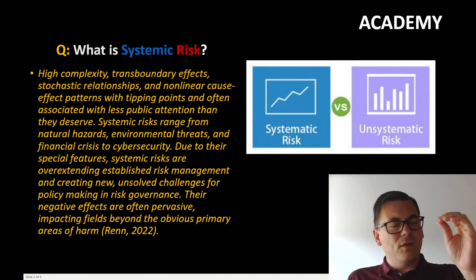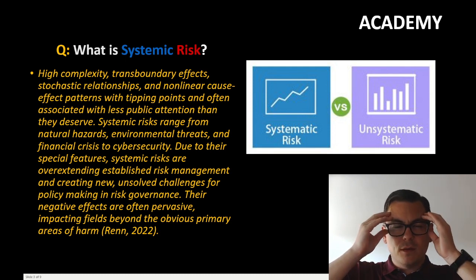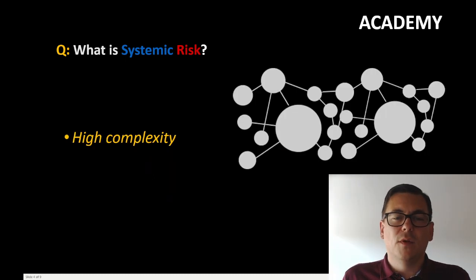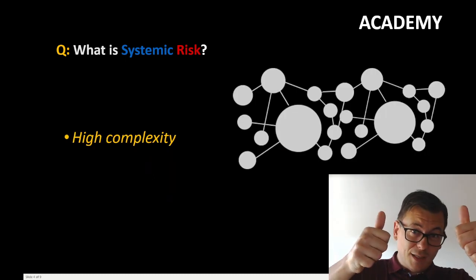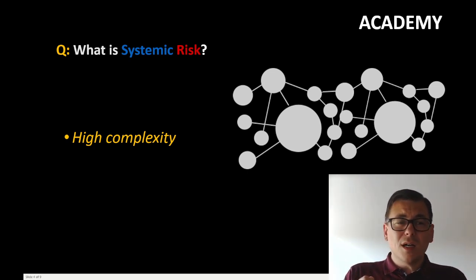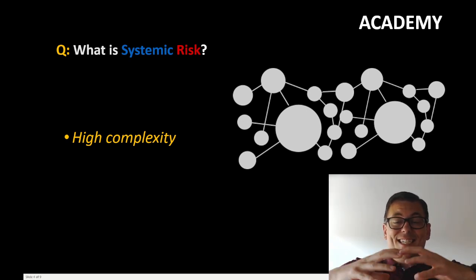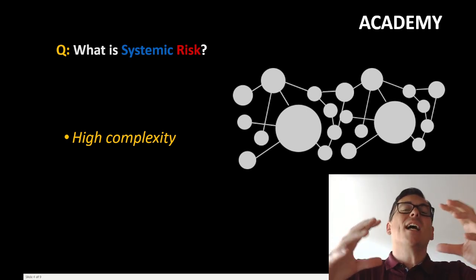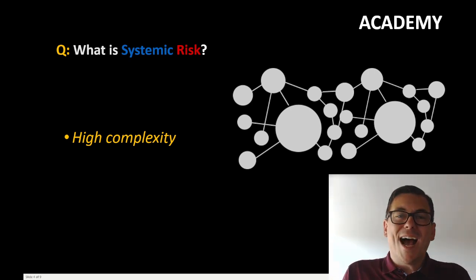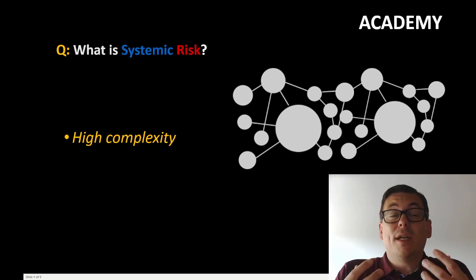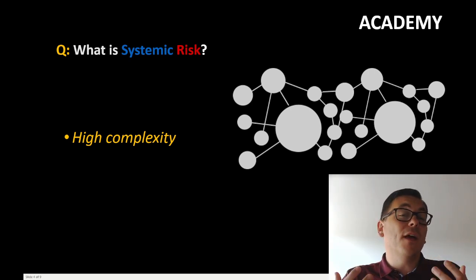So let's just scale it down and take it one by one, just to look at the main characteristics here. So we have high complexity because when we're talking about systemic risk, we're talking about risk that is founded in our systems and the systems that we have created or the systems that we affect.